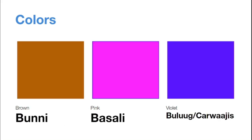And then we have the color brown, which is Bunni. Bunni. Pink is Basali. Basali. And violet — I haven't found a translation for violet in Somali, so I just put down either the color blue or purple. You can either say Bulug or Arwajis.